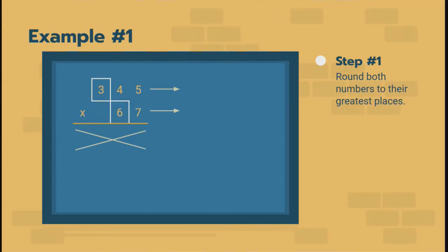And in a traditional fifth grade problem where you have three digits multiplied by two digits, this is kind of the pattern that you're going to see. So, 345, we're going to round that to 300. 67, we're going to round to 70.